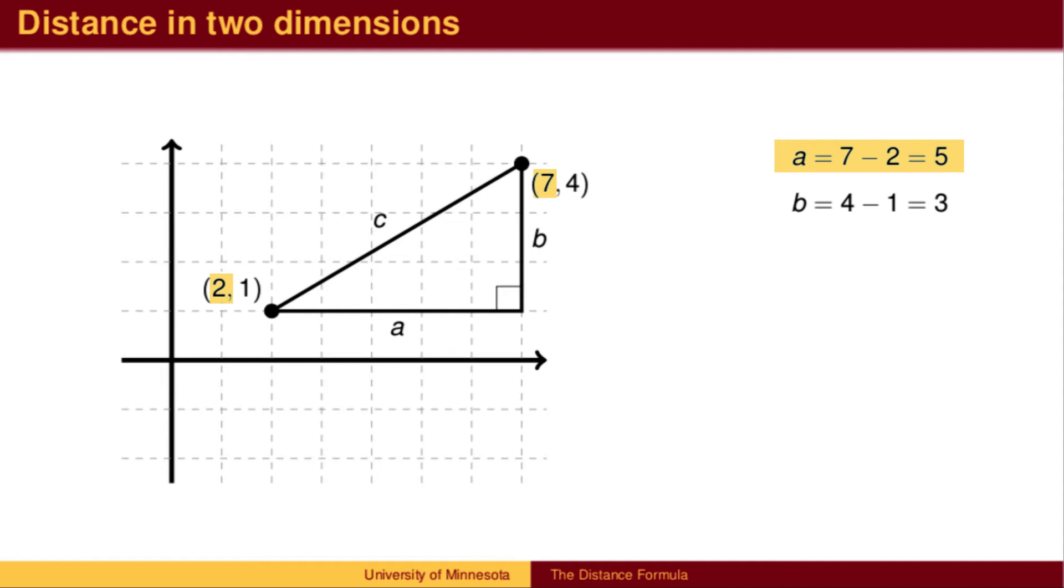We find the x-distance and y-distance, A and B respectively, by subtracting coordinates. We compute the distance using the Pythagorean Theorem. We can take a square root to simplify.